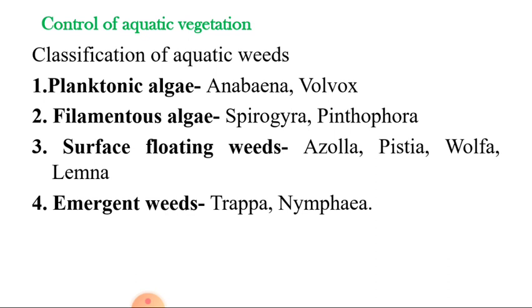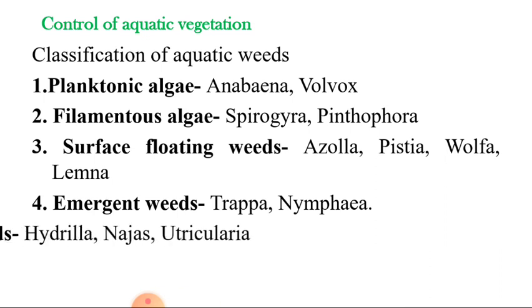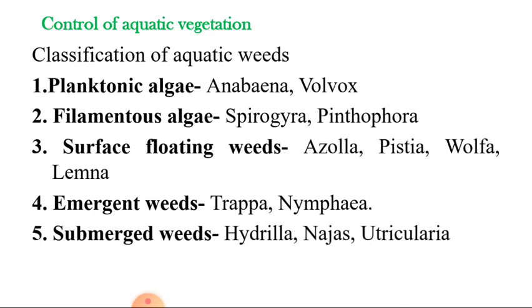The next type is emergent weeds, like Trapa and Nymphaea. These are rooted in the bottom soil but have all or some part of their plant body — that is, leaves or shoots — above the water surface, so they are called emergent weeds.